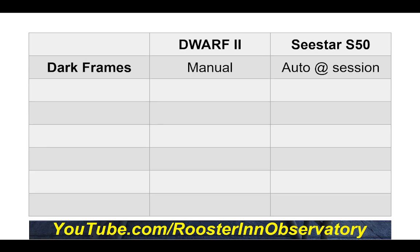Dark frames — bar none, this is my favorite feature of the Sea Star. It takes darks automatically at the start of every session and within a session at the start of every new target if it thinks it needs another set. With the Dwarf 2, you have to put the machine in its bag, put the bag in the suitcase, put the suitcase in a dark room, turn all the lights off, and take the darks — and try to remember to do it before every session.